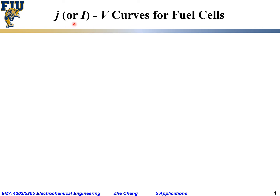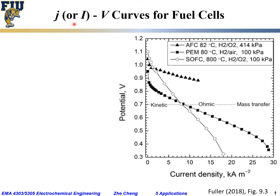Now let's look at the IV, or current density-voltage curve, for different types of fuel cells. This is an example plot for three different types of fuel cells, taken from the textbook by Dr. Fuller.